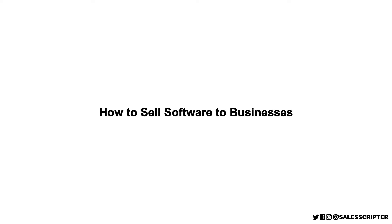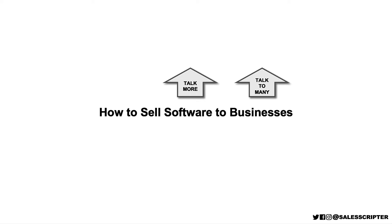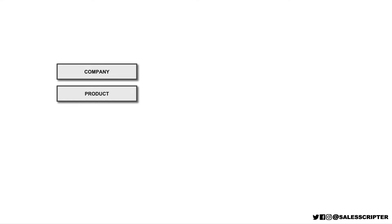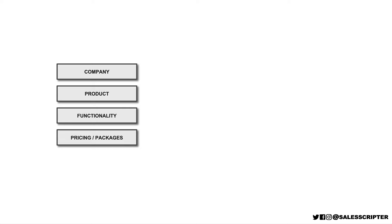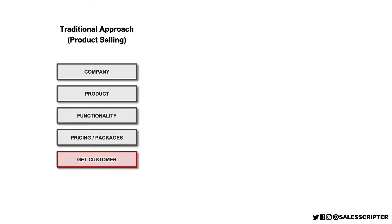I personally believe that most salespeople use a strategy that's fairly simple that kind of starts with: we have software that we want to sell, so let's talk about our software as much as we can to as many businesses as we can. And that usually looks something like this. We'll send emails and make calls where we say something like: Hi, this is Michael Halper, and I'm with Company X. We sell product X. This is what it does. This is how much it costs. Do you need what I sell? I think this is a very traditional approach that the majority of salespeople use. I refer to this as product selling.